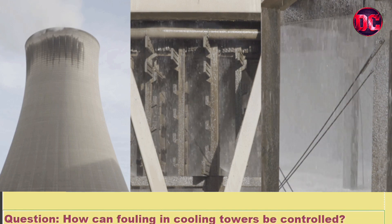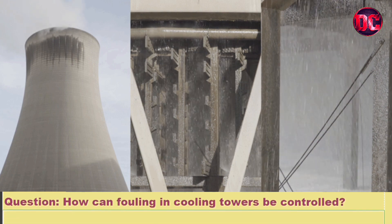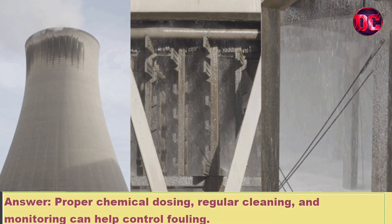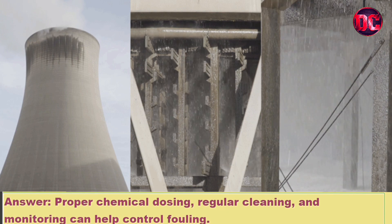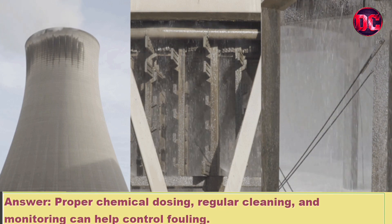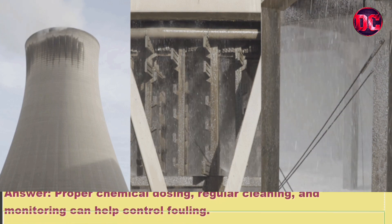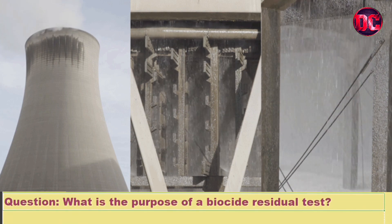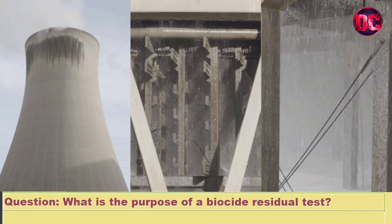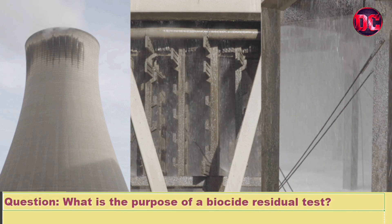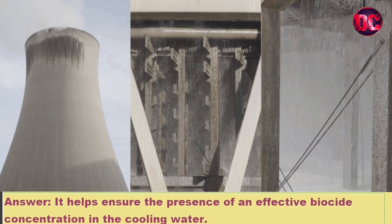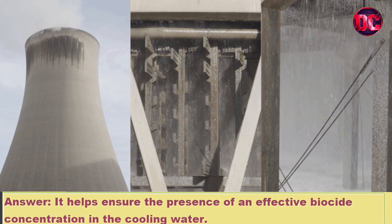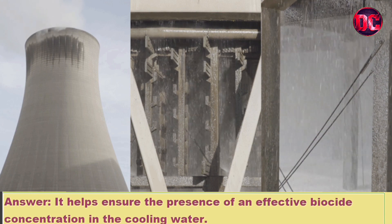Question: How can fouling in cooling towers be controlled? Answer: Proper chemical dosing, regular cleaning, and monitoring can help control fouling. Question: What is the purpose of a biocide residual test? Answer: It helps ensure the presence of an effective biocide concentration in the cooling water.